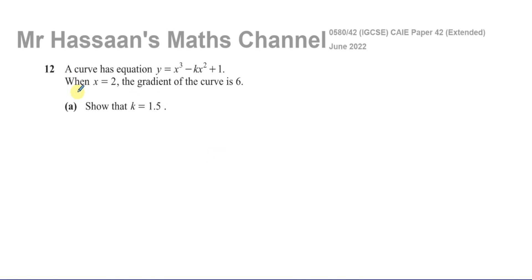So they told us that when x equals 2, the gradient of the curve is 6. Now the gradient of a curve is found by using what's called the gradient function. And the gradient function is what you get when you differentiate this function with respect to x, when you find dy dx.